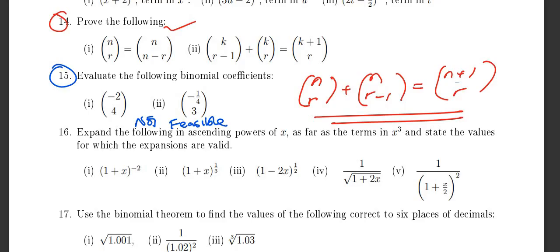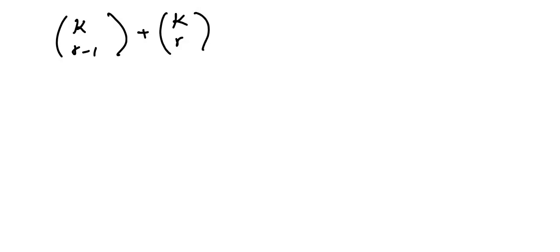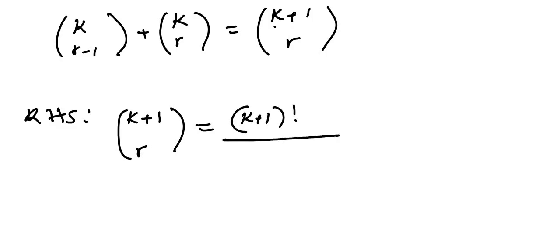This is basically what we need to prove — the only difference is that where there's n, they've put k. So we need to show that k choose (r minus 1) plus k choose r equals (k plus 1) choose r. I'll start with the right hand side, which equals (k plus 1) choose r, written as (k plus 1) factorial over (k plus 1 minus r) factorial times r factorial.